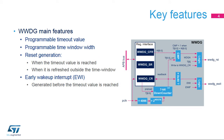The Window Watchdog offers several features. The user can program the timeout value and the window width according to application needs. It can generate a reset under two conditions: when the down-counter value becomes less than or equal to 0x3F, or when the watchdog is refreshed outside the time window. It can generate an early wake-up interrupt when the down-counter reaches 0x40, which can be used to reload the down-counter to avoid a reset or to manage system recovery and context backup operations.